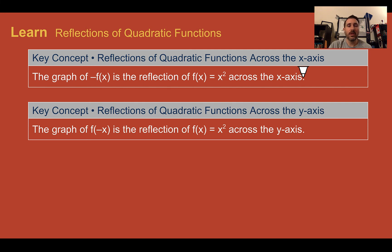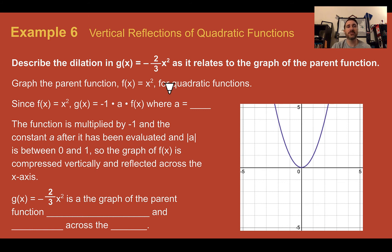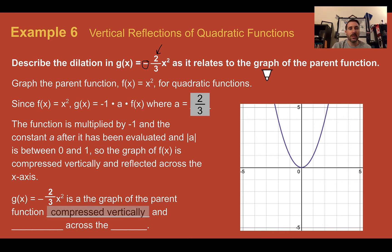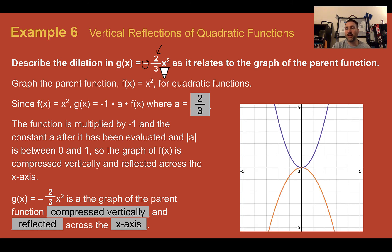Let's learn reflections of quadratic functions. There are two types: across the x-axis and across the y-axis. If there is a negative out front of the function, it is going to reflect it downward across the x-axis. If that negative is inside the parentheses with the x, it will reflect it across the y-axis. Example six: vertical reflections of quadratic functions. Describe the dilation and reflection in g of x equals negative two thirds x squared. Here a is two thirds and the negative out front means it's going to reflect downward over the x-axis. It would be compressed vertically and reflected across the x-axis — every point is now at two thirds down.